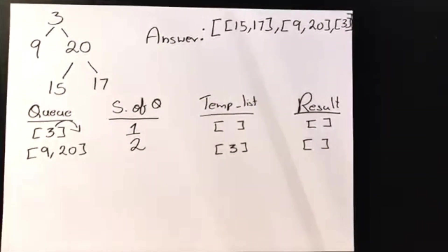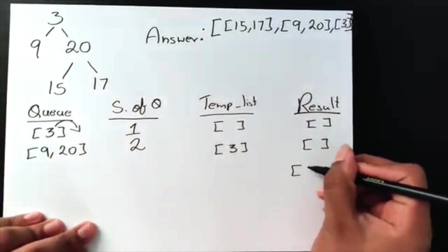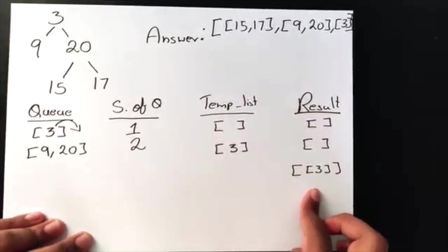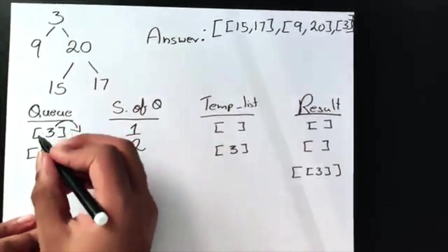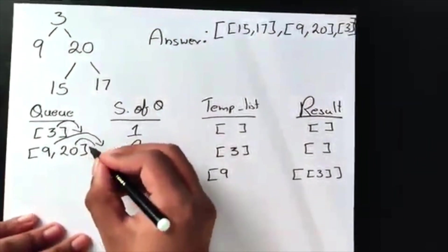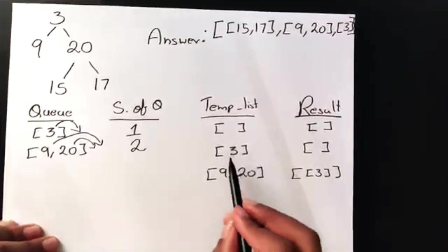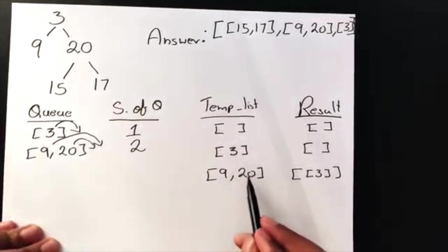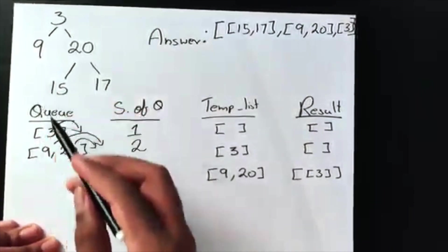The next step is to add our temporary list to the result — so we add the list [3] to our results. Then the temporary list gets replaced with whatever is in the queue. We dequeue 9 and add it to temp, then dequeue 20 and add it to temp. Now we look at the children nodes for each element in the temp list.